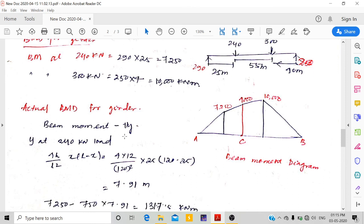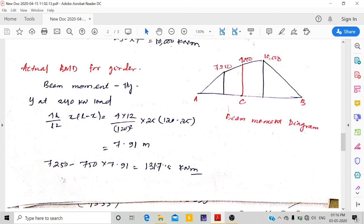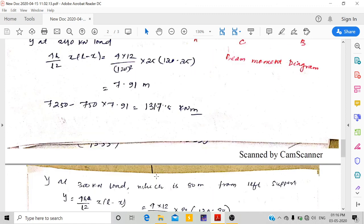The actual bending moment for the girder is calculated as beam moment minus Hy. The y value is 4h/(L²)·x·(L-x). At the 240 kN load where x equals 25, we get 7250 minus Hy, which gives 1317.5.